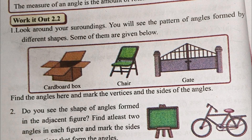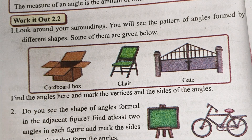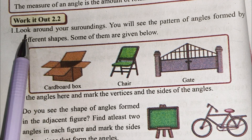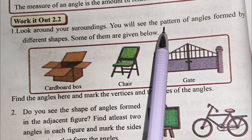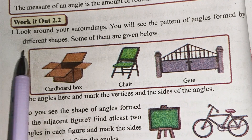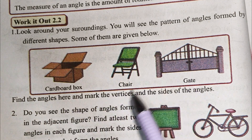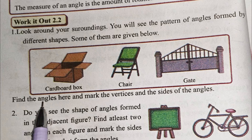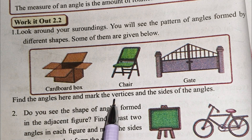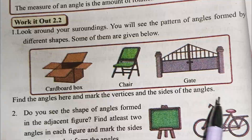Hello everyone. I am going to work out Exercise 2.2. Look around your surroundings — you will see the patterns of angles formed by different shapes. Some of them are given below. Find the angles here and mark the vertices and the size of the angles.